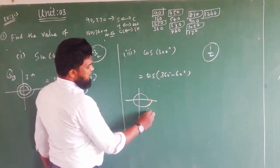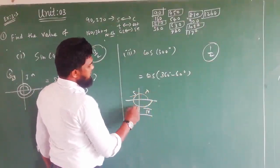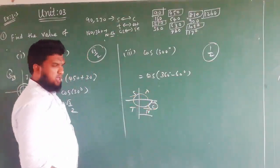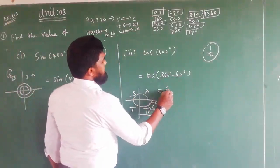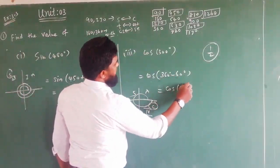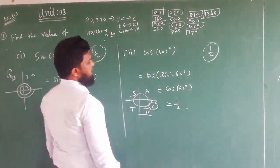360 minus 1 gives us the same. Cos is positive. So cos 360 minus 60 equals cos 60. The value of cos 60.